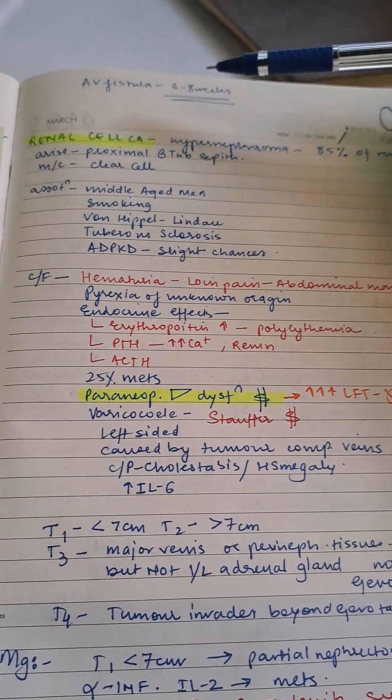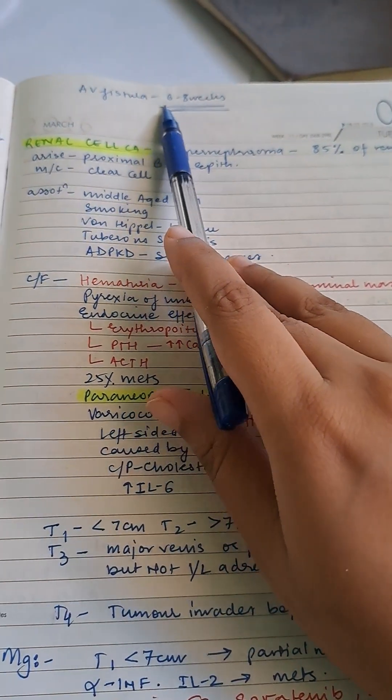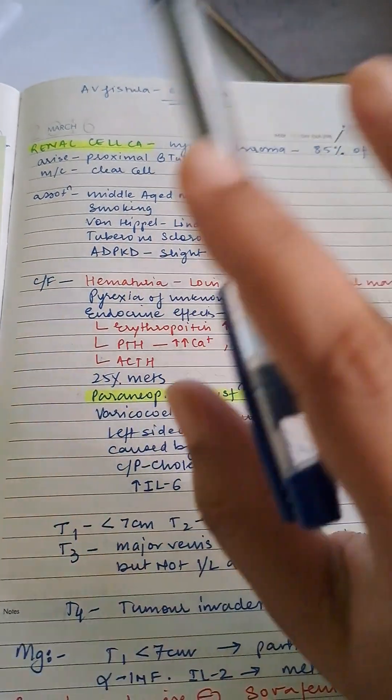AV fistula takes 6-8 weeks to form. This is one of the MCQs.